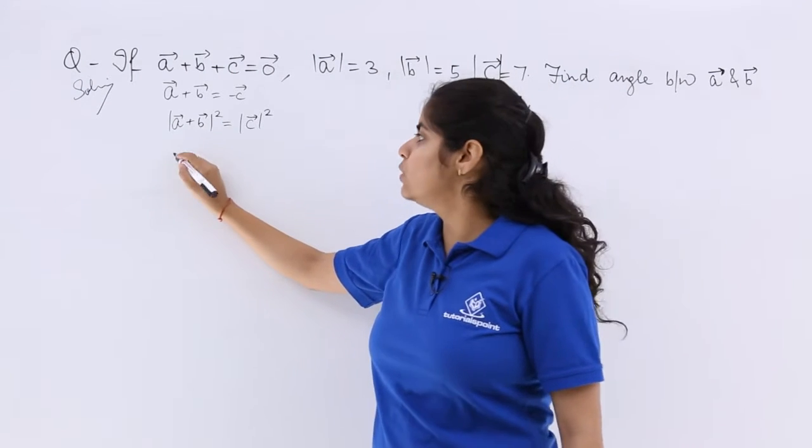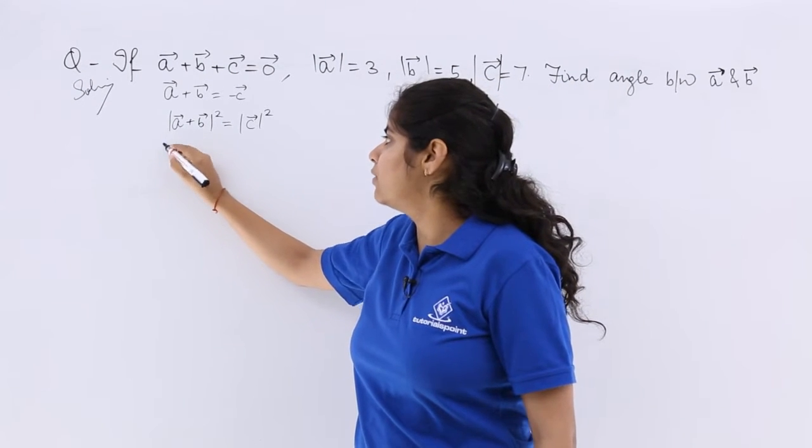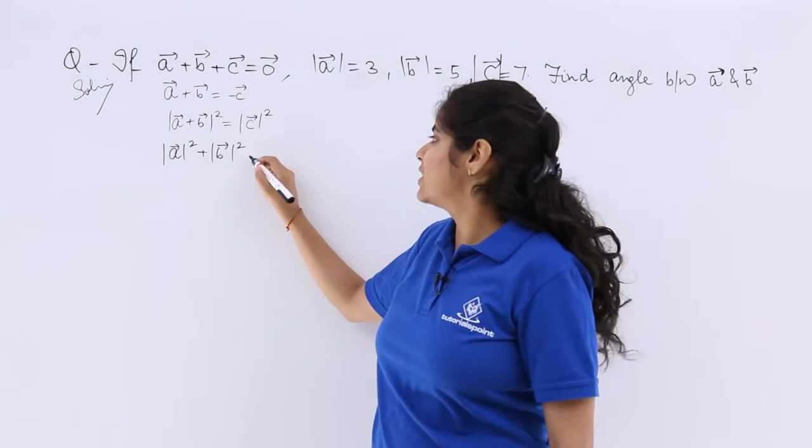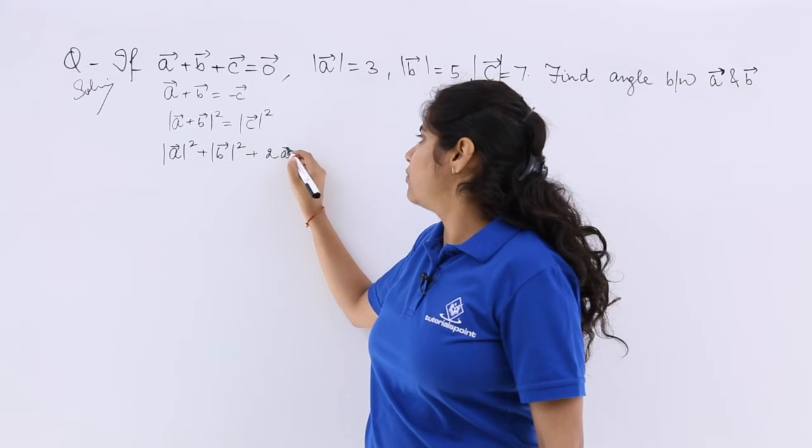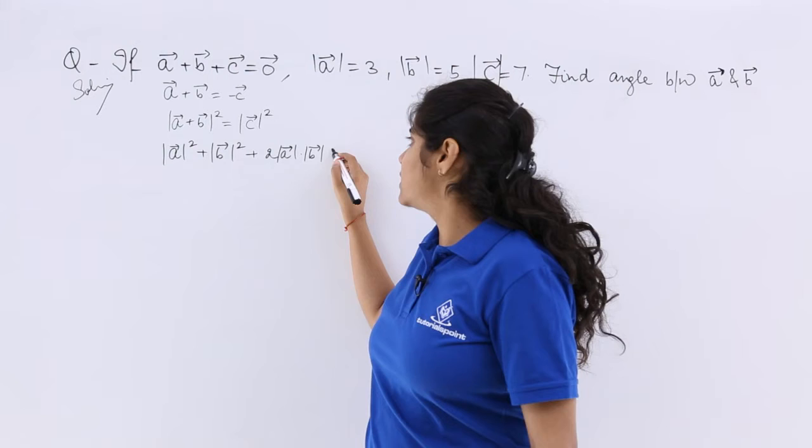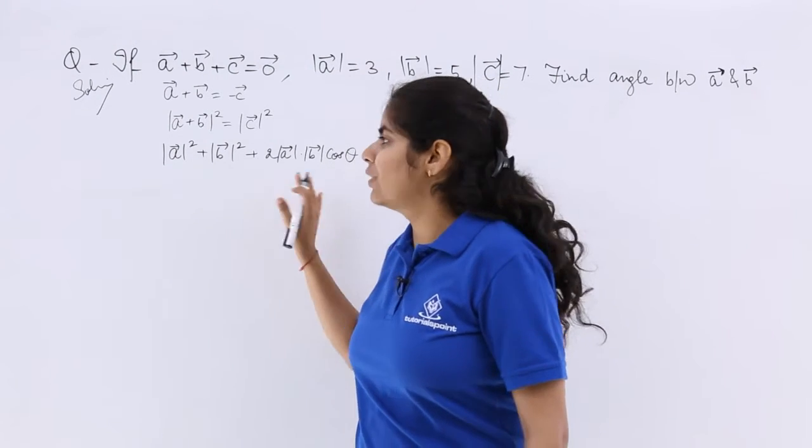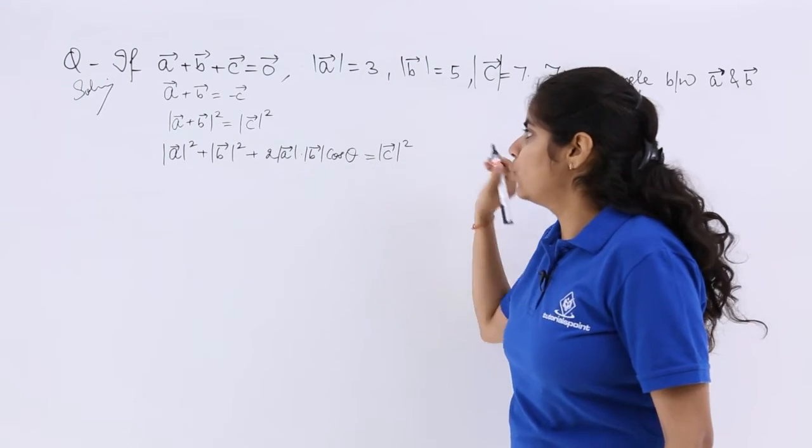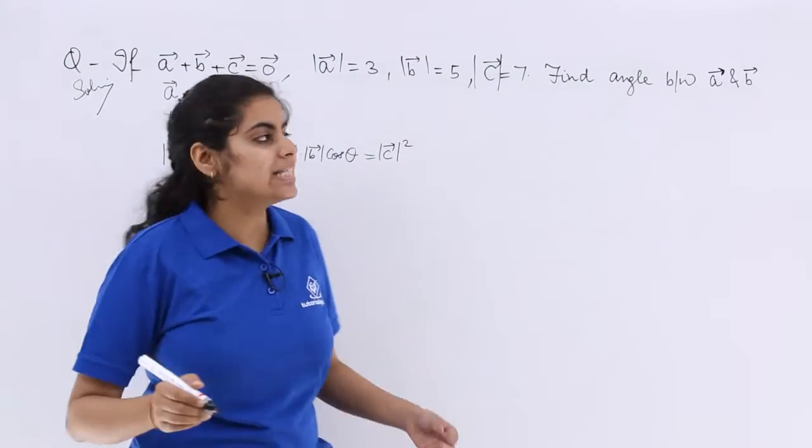Let's open this. You know the property we started, that will be A square plus B square plus twice of AB cos theta. Do not forget it is not 2AB simply, and here it is C vector magnitude whole square.